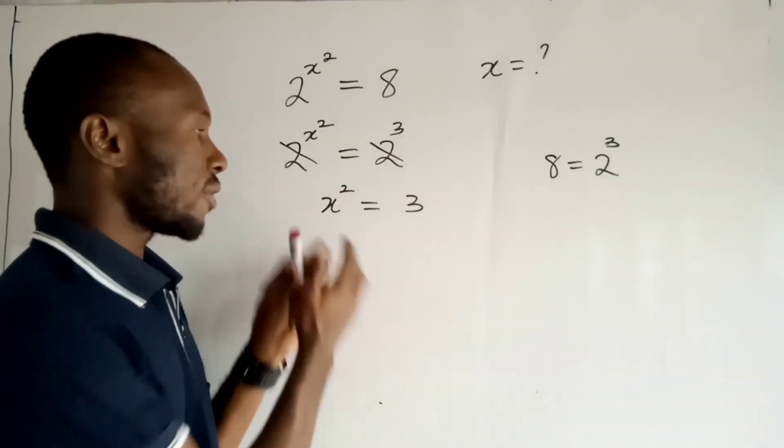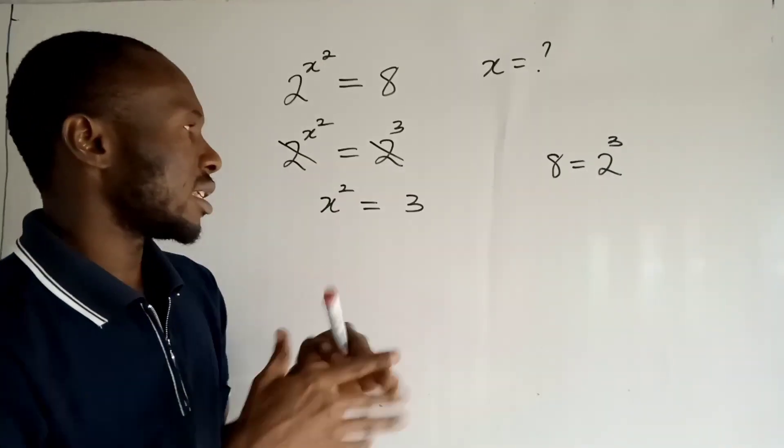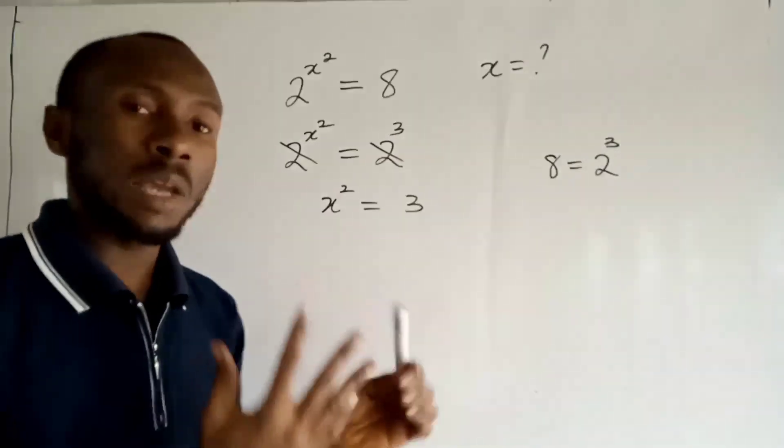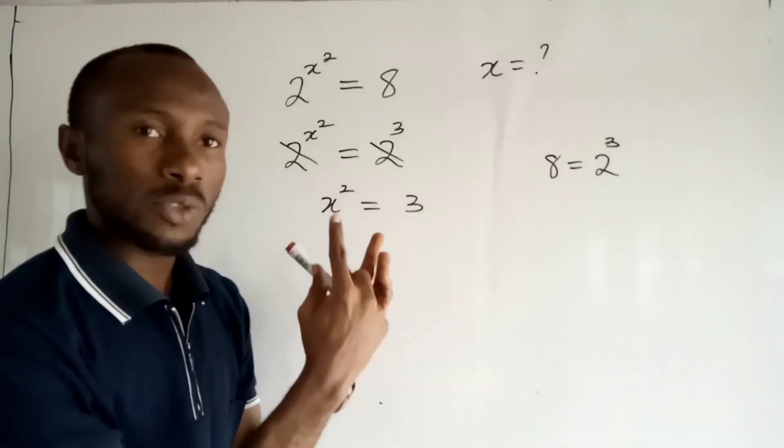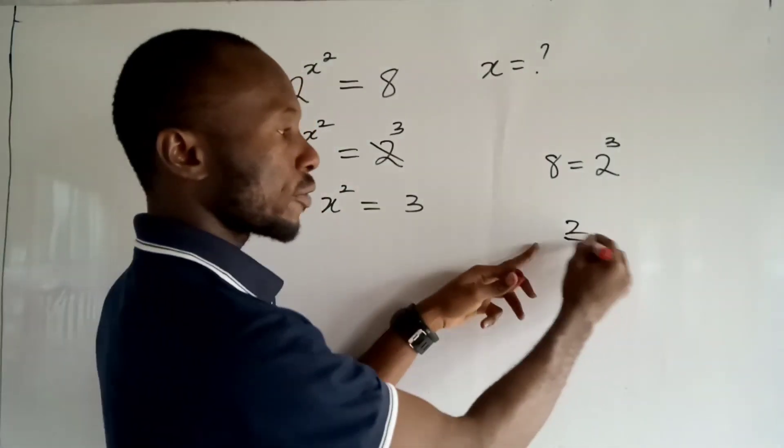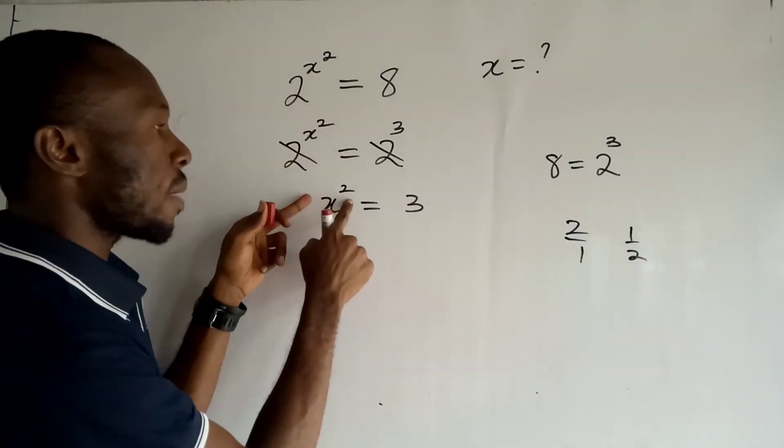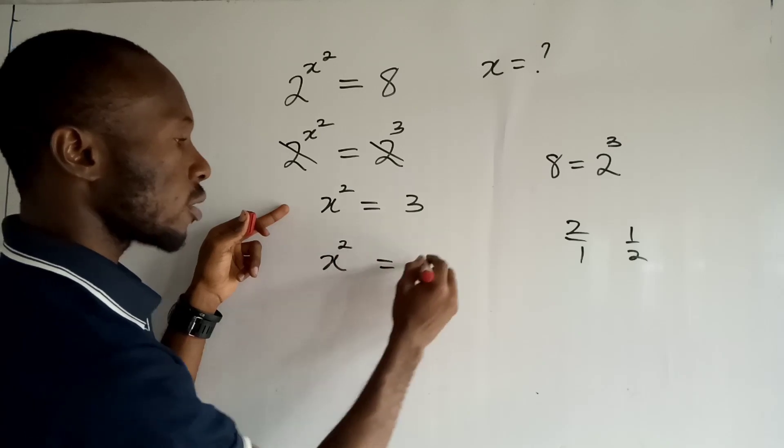And now we want to find the value of x. So naturally, we need to take away this square from this guy. And the easiest way to do that is to take the power of 1 over 2 of both sides. Now this is 2, so the inverse of 2 is 1 over 2. So I'll take the power of 1 over 2 of both sides, so I'll have x to the power of 2 power 1 over 2 is equal to 3 to the power 1 over 2.